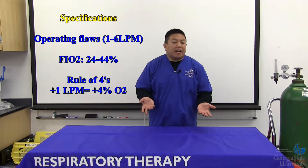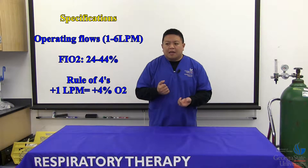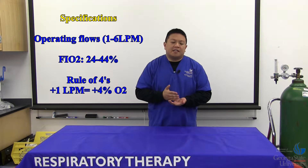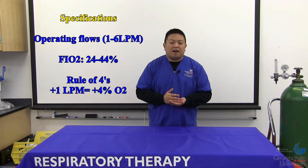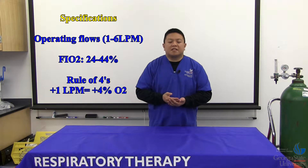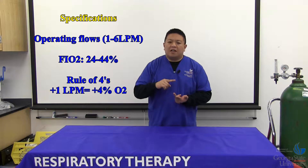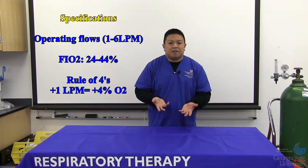That's not accounting for anatomy, which can vary between persons. With nasal cannula we like to say it follows the rule of fours — for every one liter of nasal cannula oxygen you're delivering, you're delivering an extra four percent. So your first liter is 24%, then 28, 32, 36, and so on.